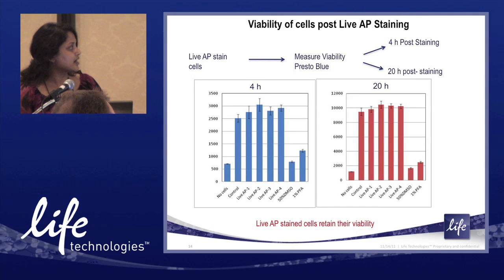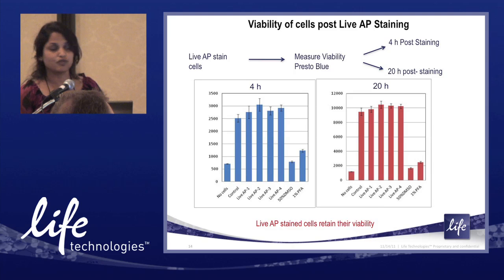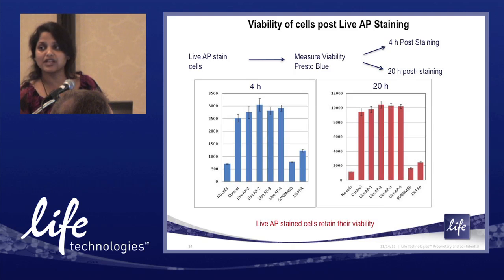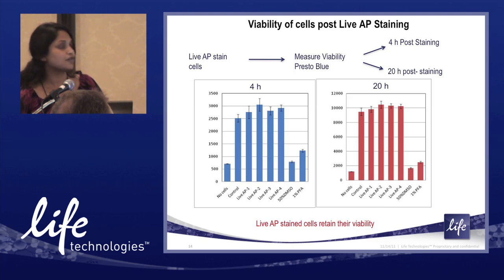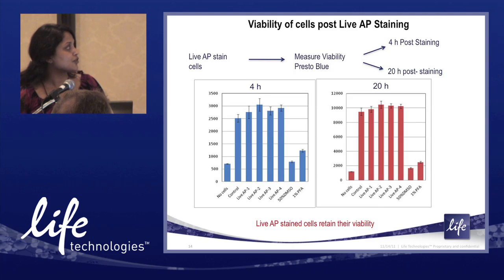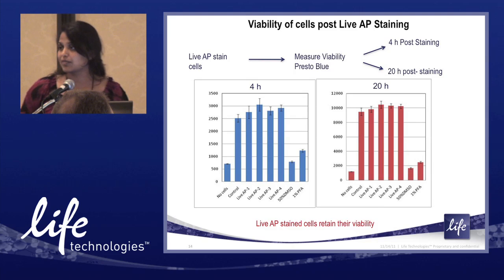Shown here is the no-cells background and the control cells which did not receive the live AP stain but were treated similarly in terms of washes. Four independent dyes, synthesized separately with experiments carried out separately, showed no impact on cell viability. As negative controls, we included 50% DMSO and 1% PFA, which cause significant cell death. With the addition of live AP, there was no significant reduction in cell number as measured by the Presto Blue Viability Assay.